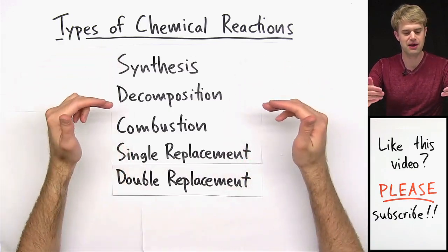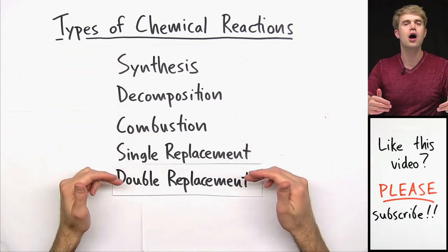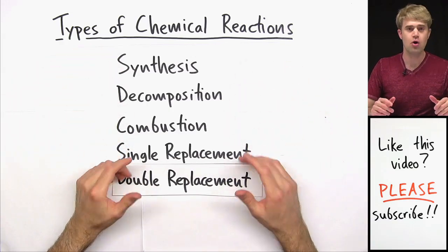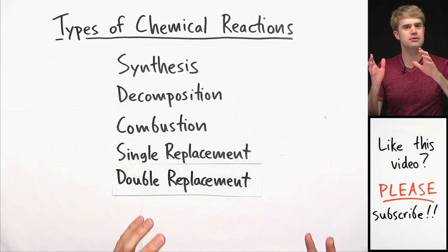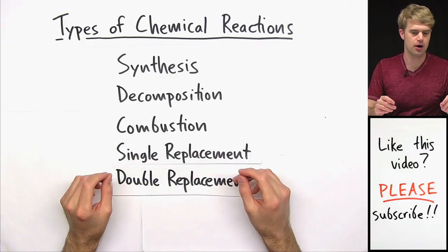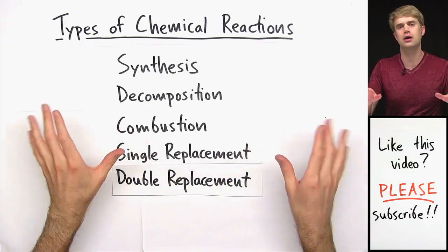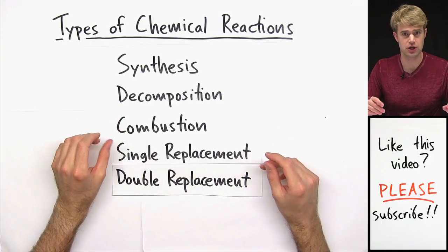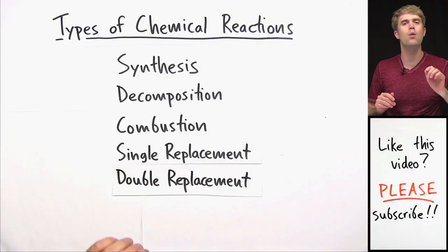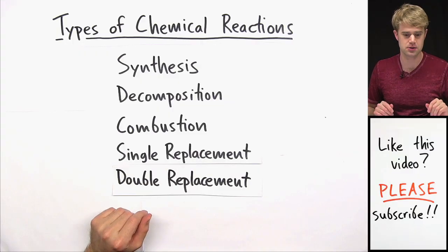Let's talk about these five major types of chemical reactions. We'll look at examples of each and learn how to tell them apart so that you can look at a chemical reaction and classify it, figure out what type it is.